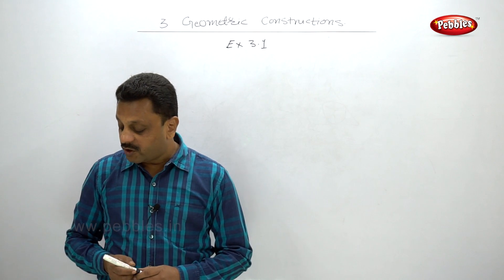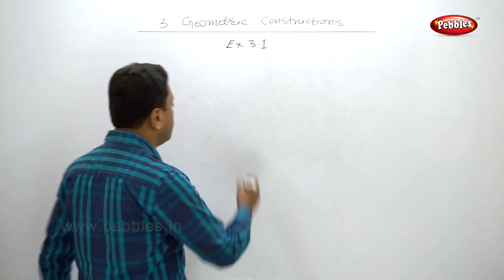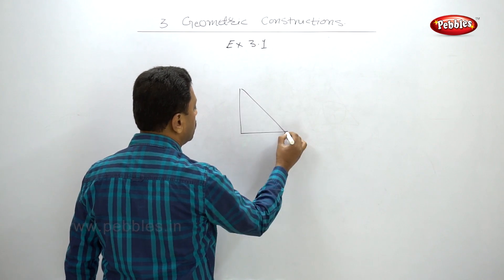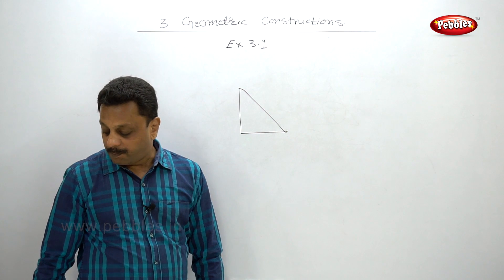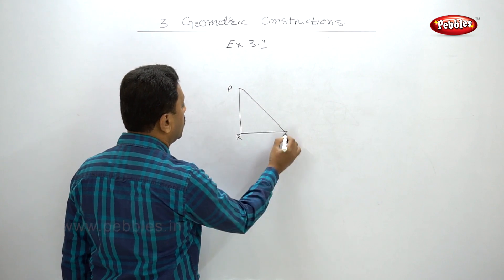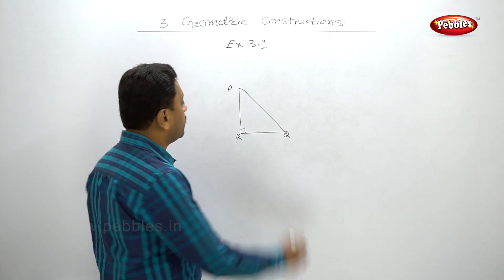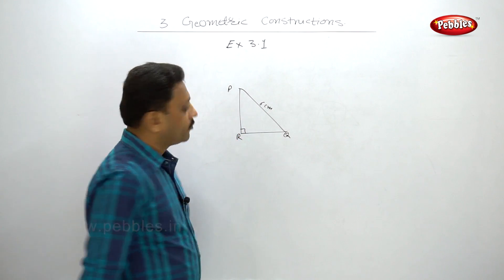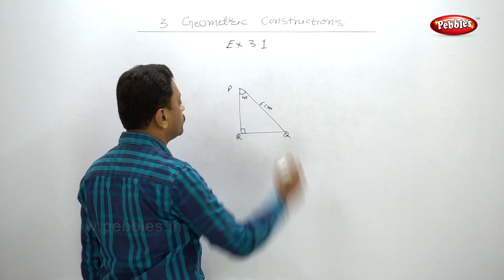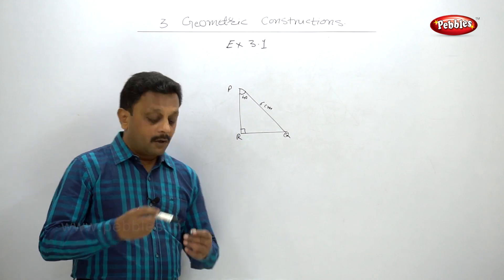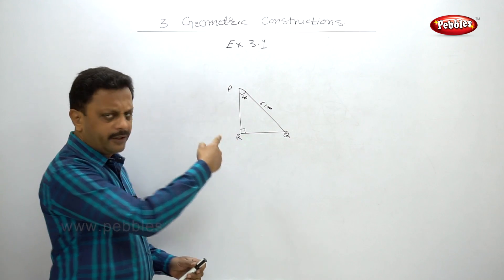Example four: construct a right-angle triangle PQR where PQ is 6 centimeters. Angle PRQ is 90 degrees and angle QPR is 40 degrees. Since all angles must sum to 180, the remaining angle at Q must be 50 degrees. When you draw the figure, note that the right angle at R will appear at the top, not in the typical orientation.